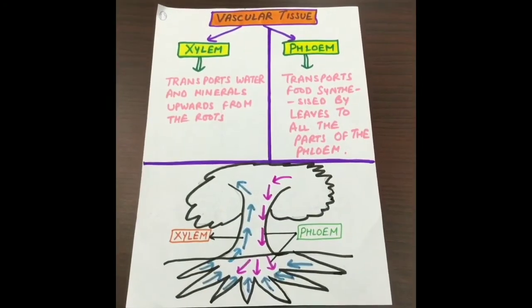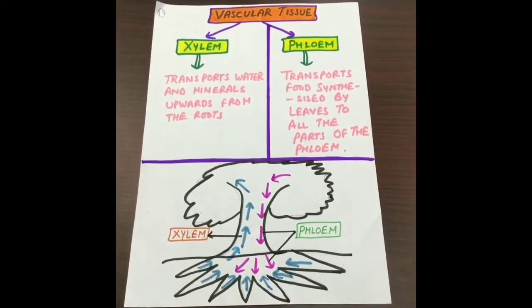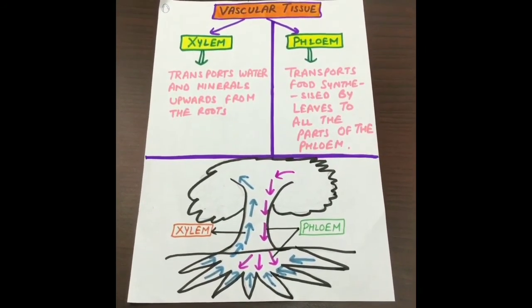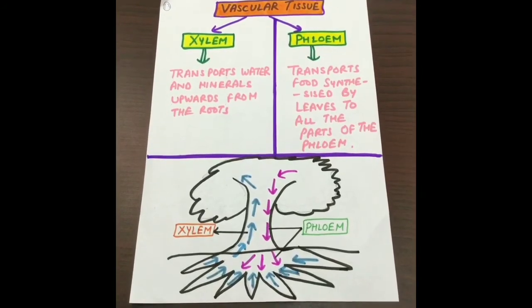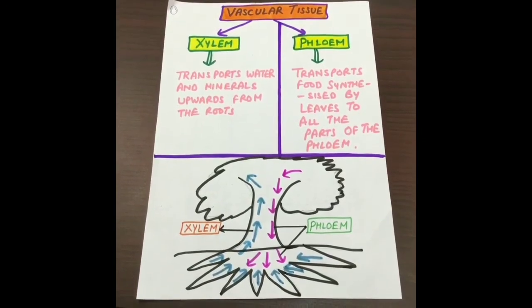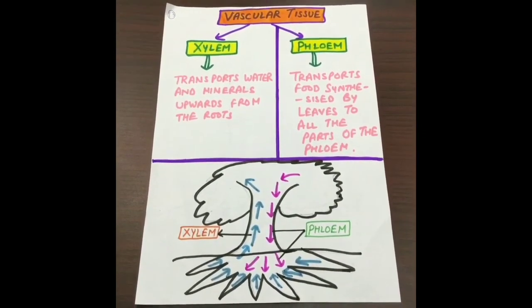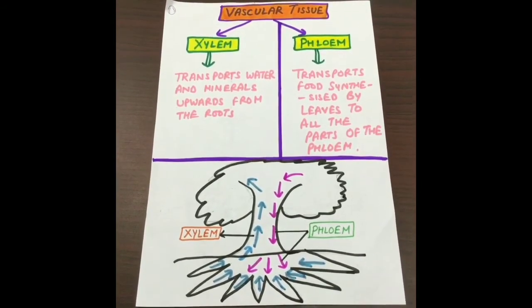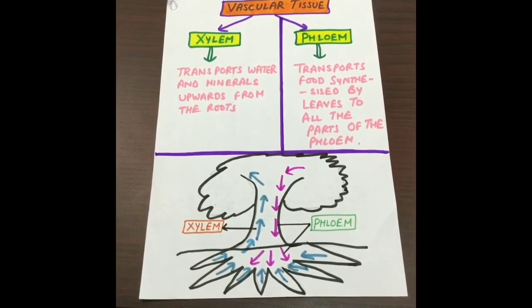We know about transport of substances in humans. Let us learn about how this process takes place in plants. Plants have vascular tissue for transport of substances. There are two types of vascular tissue in plants: xylem and phloem. Xylem transports water and minerals upwards from the roots, while phloem transports food synthesized by leaves to all the parts of the plant. You can see the diagram and learn better.